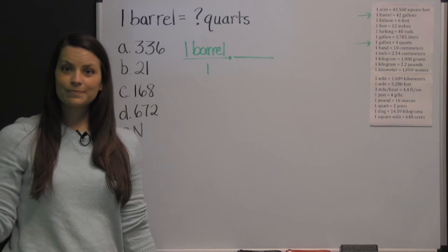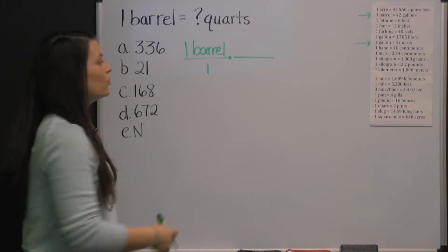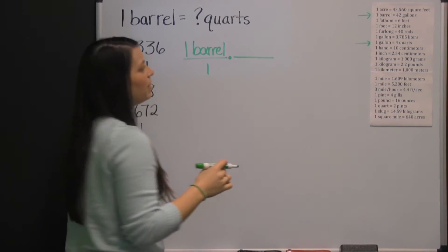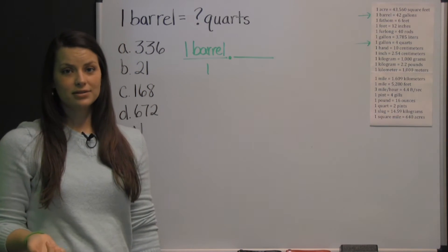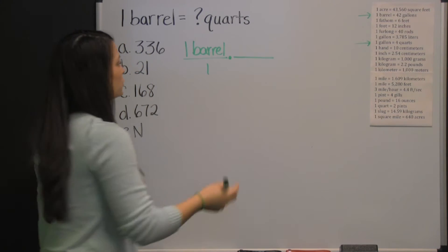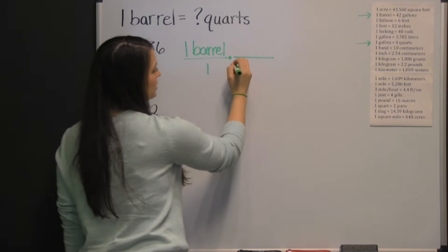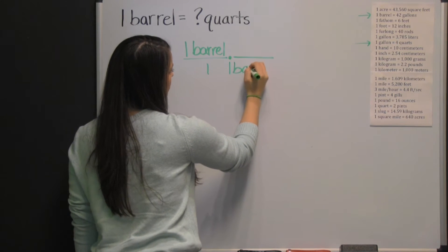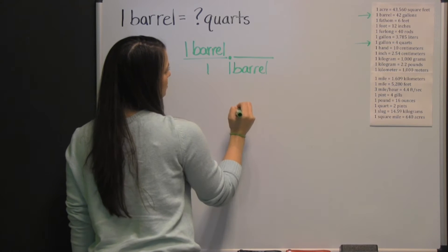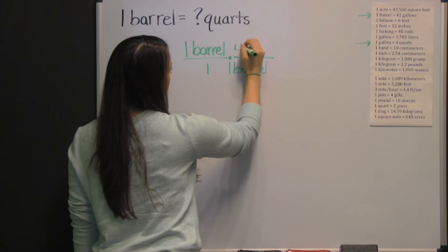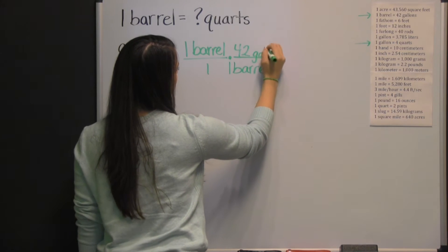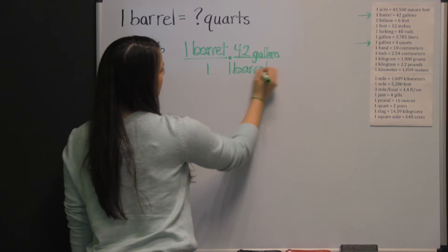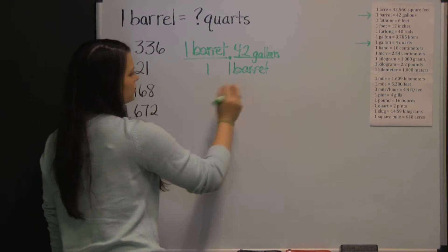I'm going to start with converting my barrels into gallons, and then I'll convert my gallons into quarts, and then we'll have our answer. We're going to multiply by this first conversion factor: one barrel is 42 gallons. We want our barrels to be in diagonal position so that when we multiply, they cross-cancel. Your barrels cross-cancel because we're multiplying fractions.